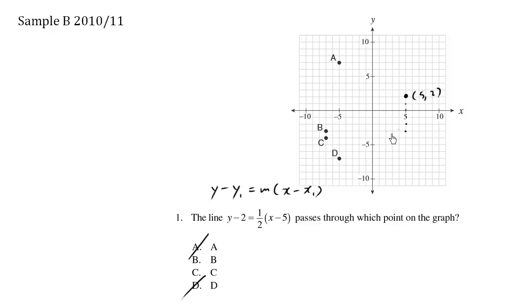So 1, 2, 3, 4, 5, 6, 7, 8, 9, 10. So point B is not fulfilling my expectations for a slope of 1 half.